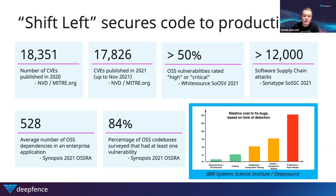When you provide an application based on open-source components to your end users or customers, you take on the responsibility for the security and provenance of those components — and with that comes great risk. Vulnerabilities are found within those components. Over 18,000 CVEs were published last year, and this year we're racing to meet or exceed that level, with almost 18,000 published up until November 2021. Over 50% of those CVEs are rated as being of high or critical severity. Other types of attacks happen in the software supply chain, where bad actors impersonate packages or intercept CI pipelines to compromise applications before they're deployed into production.